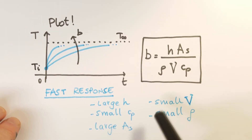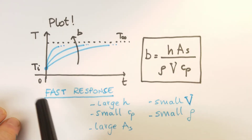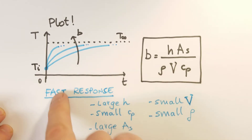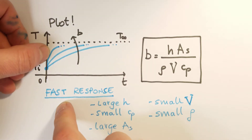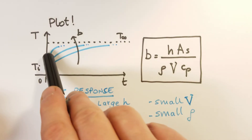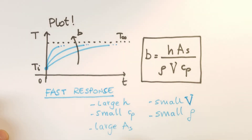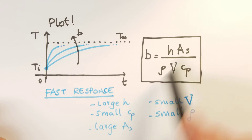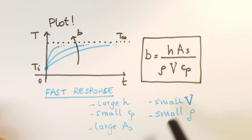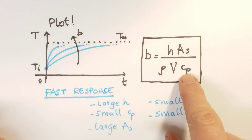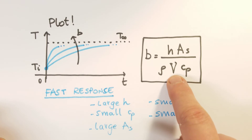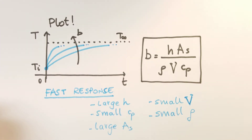We can call the exponent B. The larger B, the faster the temperature increases over time and the more quickly it approximates T∞ asymptotically. When do we have this fast response? When we have a large h — a large convection coefficient — a large surface area providing more convection, and a small internal energy: meaning small density, small volume, and also small specific heat. This makes sense for the case of a small object like the copper ball we saw before.